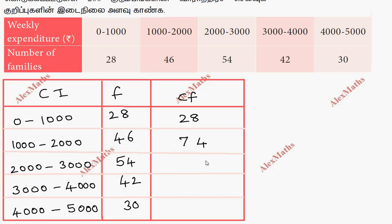74 and 54, 4 plus 4 is 8, 7 plus 5 is 12, so this is 128. Then 42 plus 30 gives 170, and the final cumulative frequency is 200. So total capital N is 200.